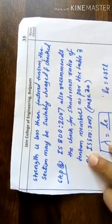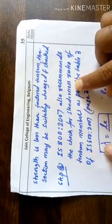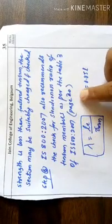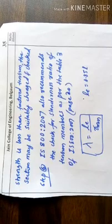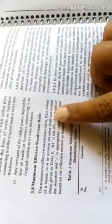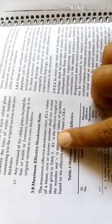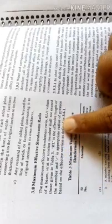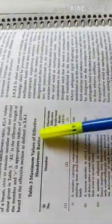Step number six: IS 800-2007 also recommends checking the slenderness ratio of tension members as per Table 3 on page 20. The maximum effective slenderness ratio KL/r values for beams, struts, or tension members shall not exceed the values given in Table 3, where KL is the effective length and R is the appropriate radius of gyration.